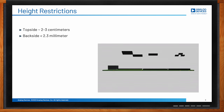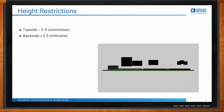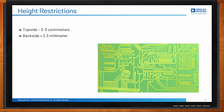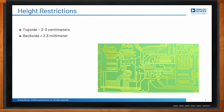Increasingly, the physical space on PCB boards comes at a premium, and it becomes valuable to use the back side of the PCBs to place components that are usually placed on the top side of the boards.